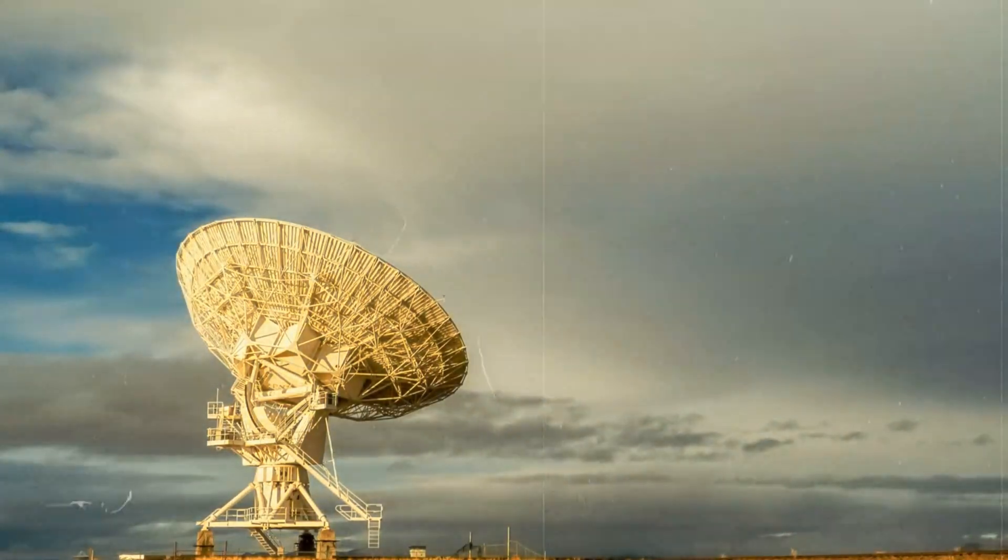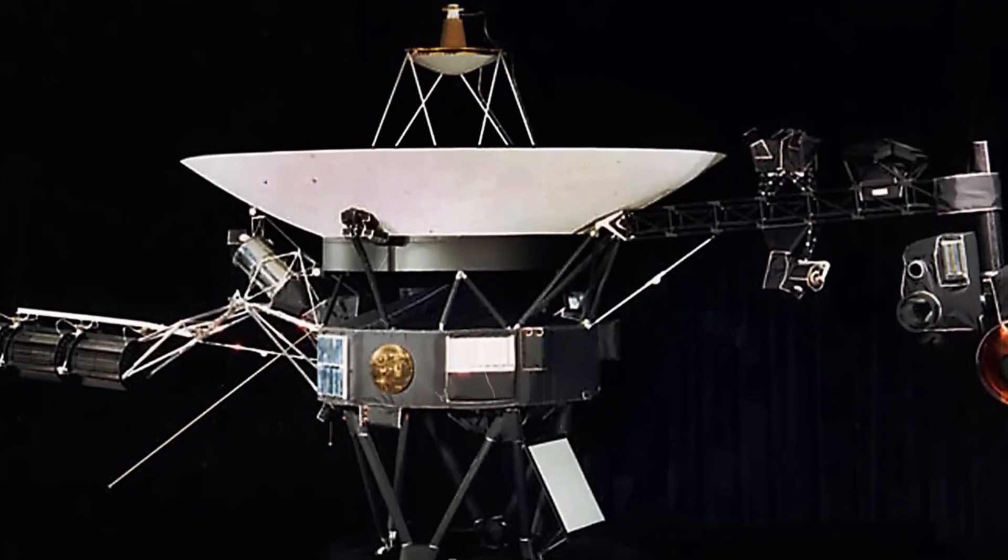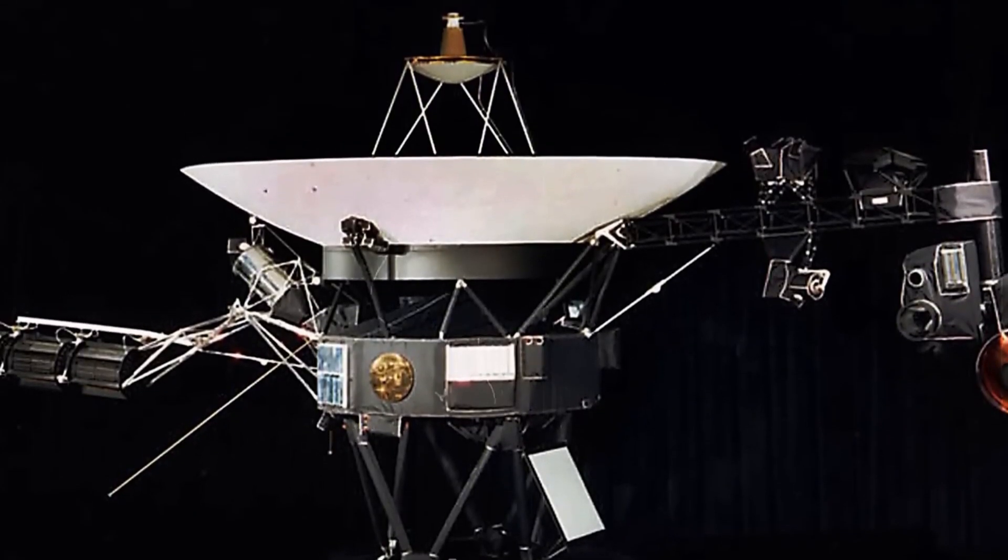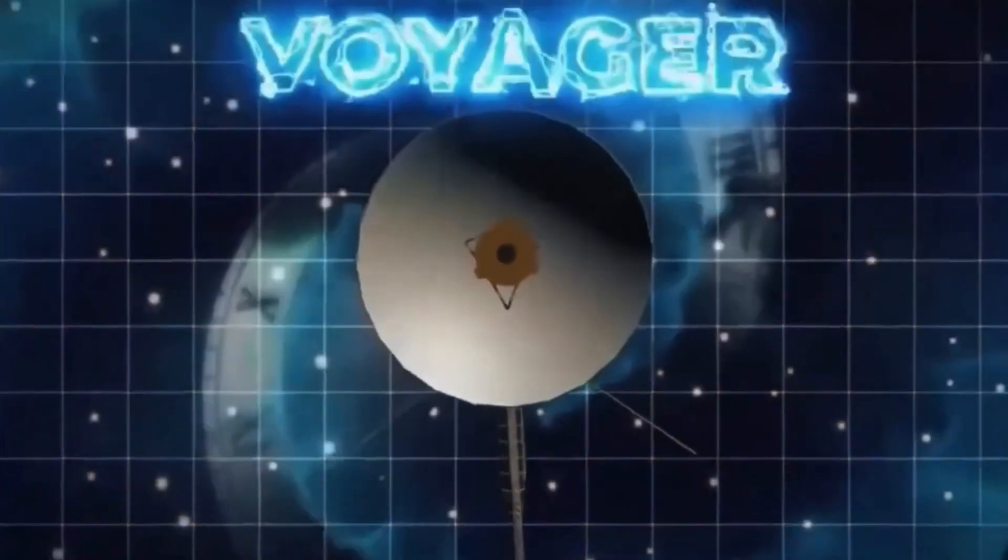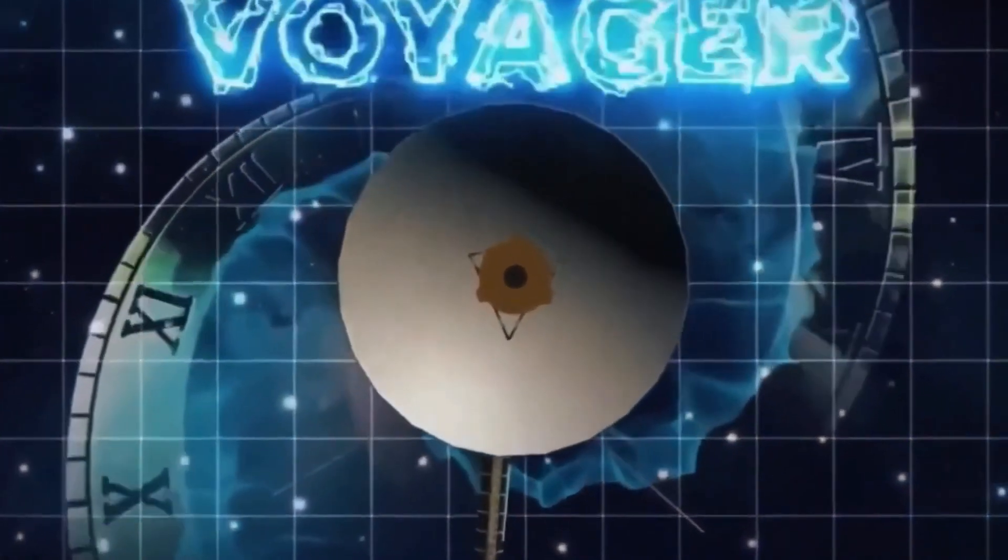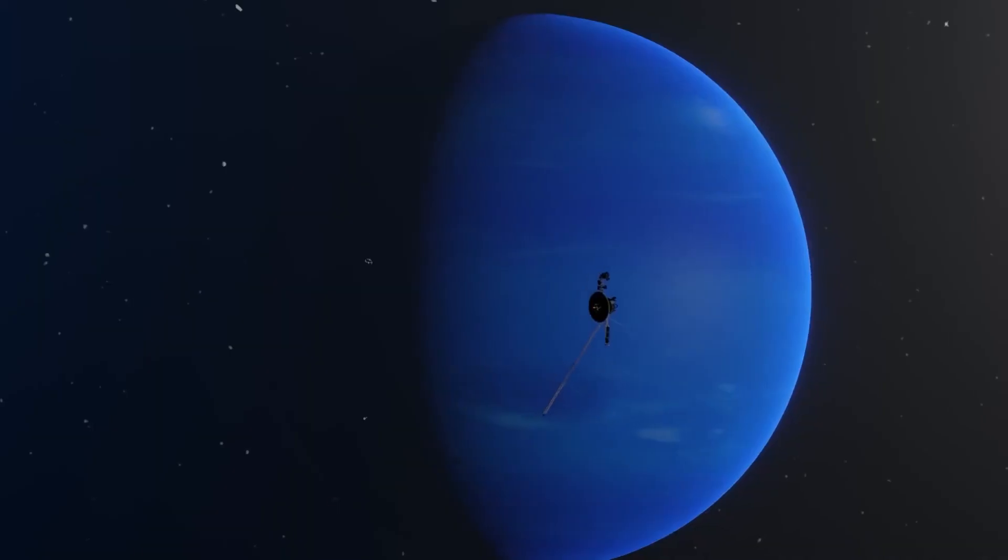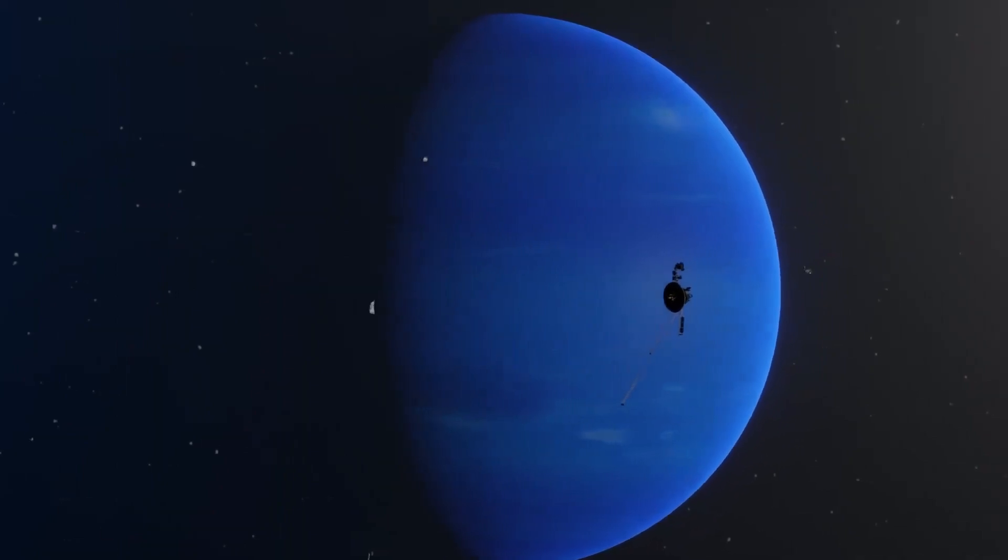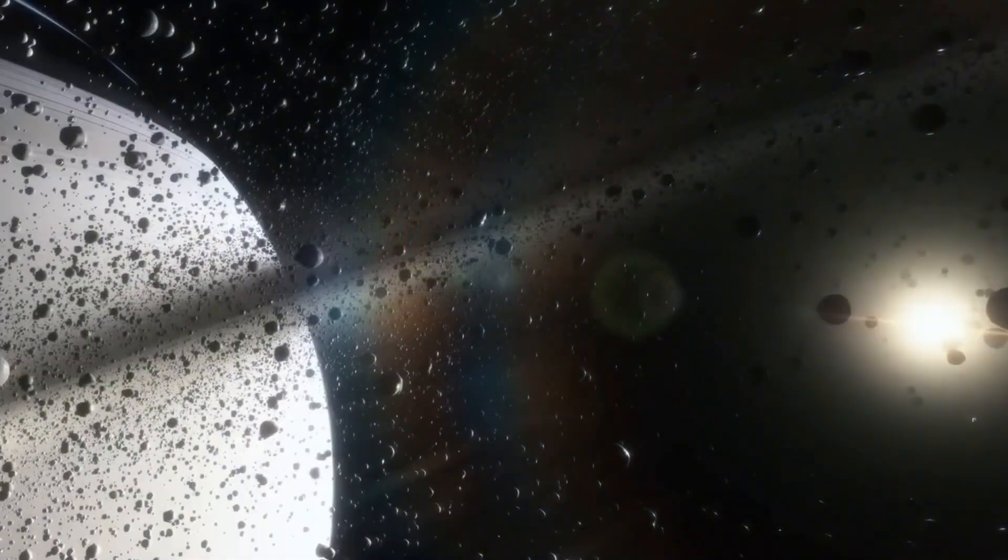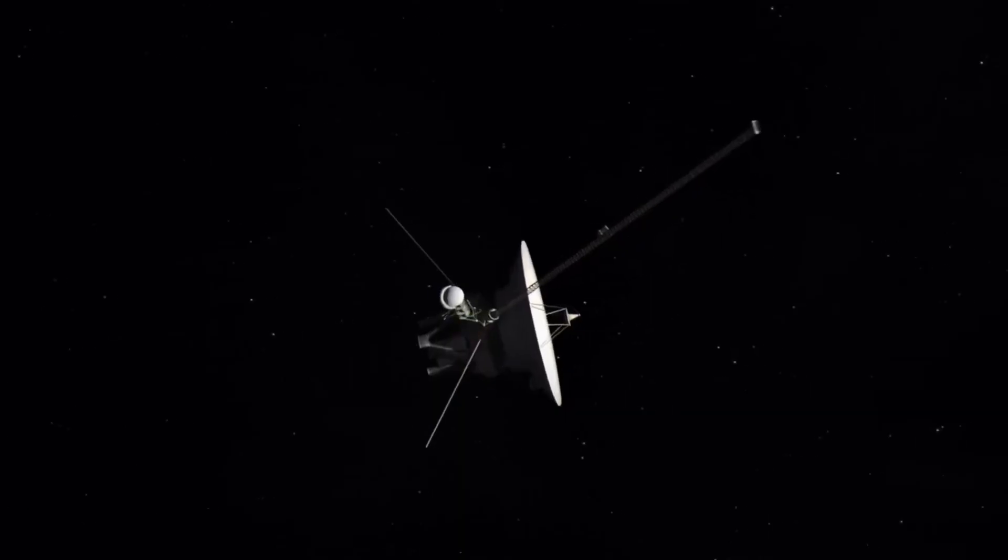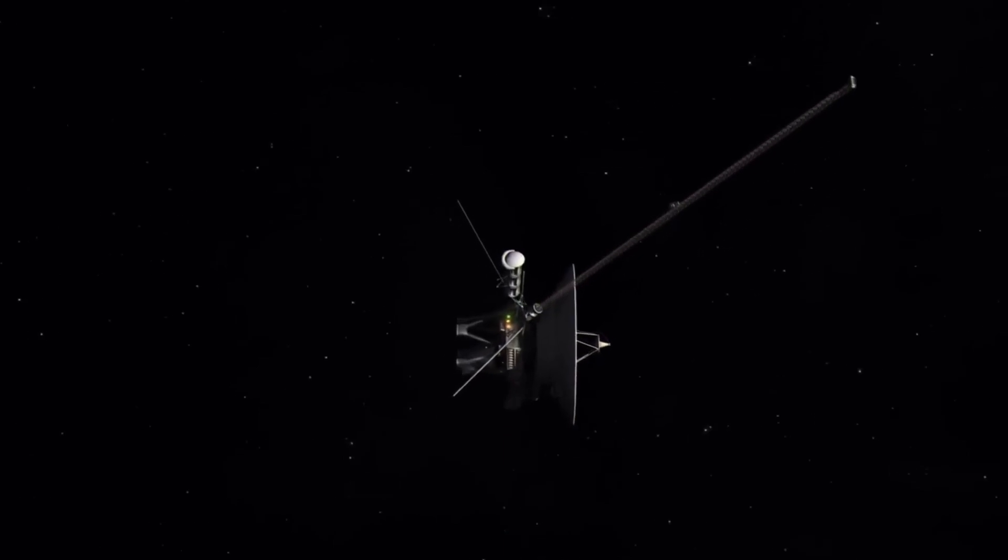However, this does not mean that Voyager 1 and 2 are chugging through space like dusty old relics - quite the opposite. In reality, they are racing through space at a speed of around 61,000 kilometers per hour. By way of comparison, the so-called muzzle velocity of a pistol bullet is only 1,260 kilometers per hour.